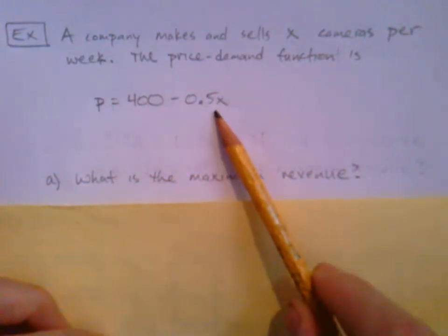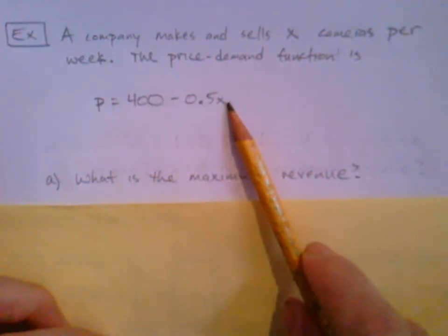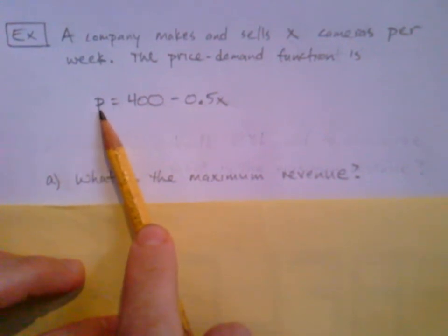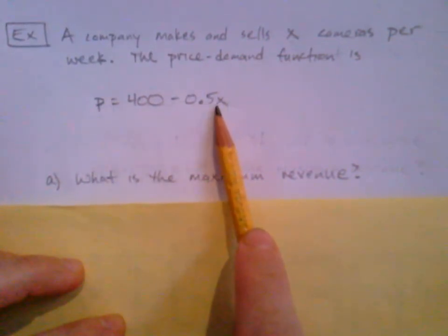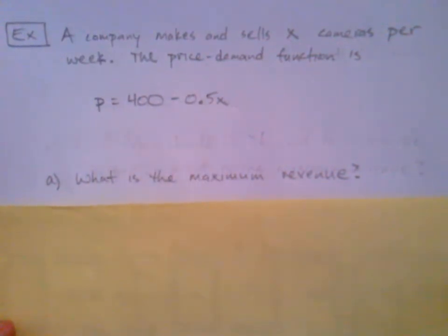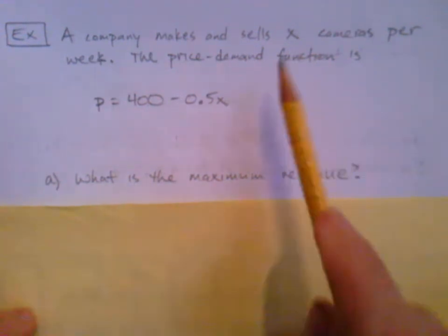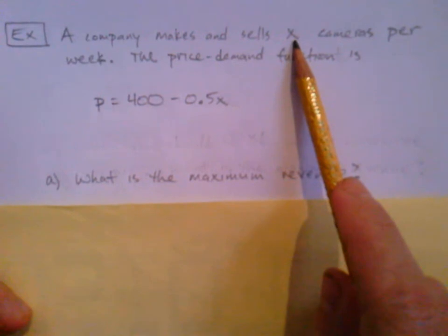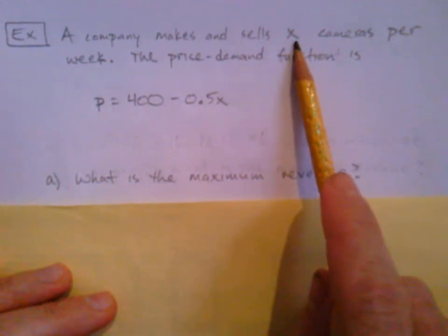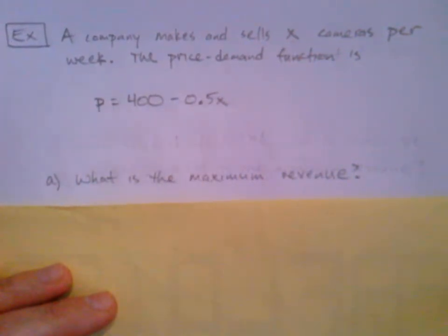But if we make too many cameras, then we're really driving down the price, since we're subtracting. We make too many cameras, our price is going to drop down too low. So we have to drop the price in order to sell all the cameras. The idea is every camera we make, we want to make sure that we sell. We want zero surplus. If we make a lot of cameras, we've got to drop that price to make sure we sell them all. So there's a sweet spot in the middle.